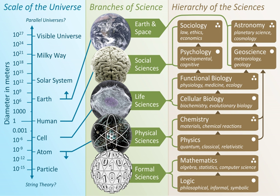Physical science is an encompassing term for the branches of natural science and science that study non-living systems, in contrast to the life sciences. However, the term 'physical' creates an unintended, somewhat arbitrary distinction, since many branches of physical science also study biological phenomena. There is a difference between physical science and physics.